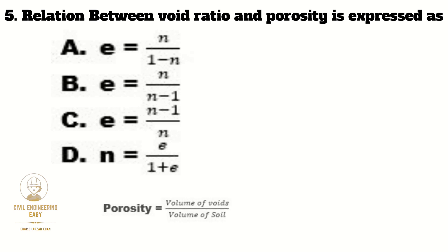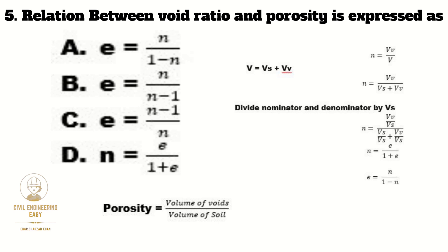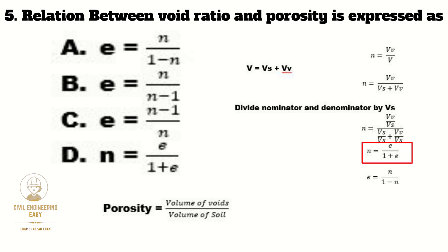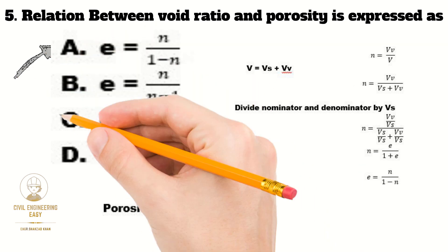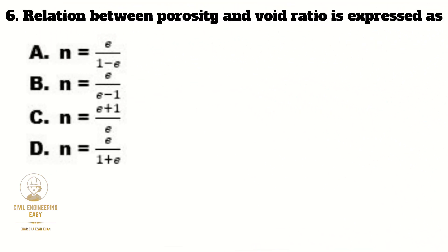In MCQ number five, the relation between void ratio and porosity is derived. Porosity n = volume of voids / total volume, and total volume = volume of soil solids + volume of voids. Substituting and dividing numerator and denominator by Vs, we get: n = e / (1 + e). Rearranging gives e = n / (1 - n). The correct option is A.